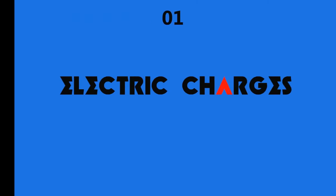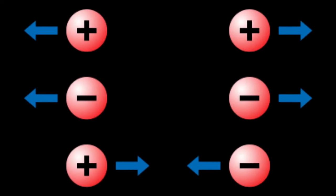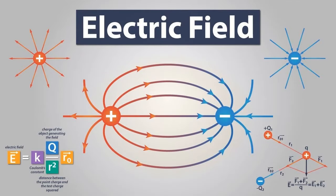First is electromagnetic signals. There are two types of electromagnetic signals: one plus and one minus. That's because it's supposed to make electromagnetic signals.